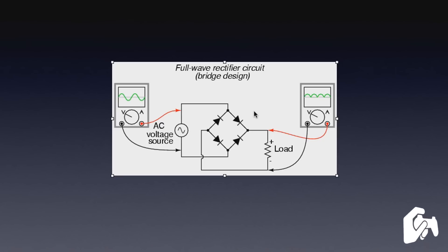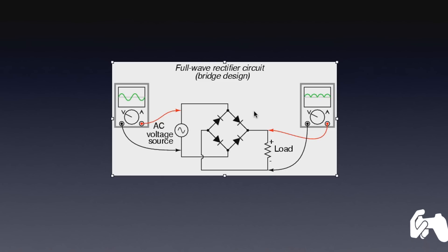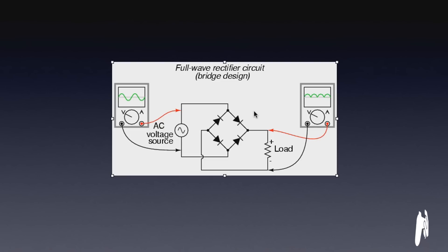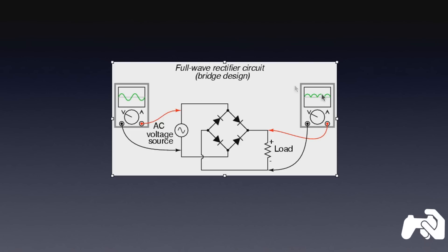Diodes are the devices used in the process of rectification. To sum everything up: a rectifier is an electronic device which converts the AC signal into pulsating DC. It is used for multiple purposes and for providing electrical current to our electronic devices. There are two types of rectifiers — half-wave and full-wave — each performing differently, which I will cover in a separate video. This has been the channel of WaterChaos.